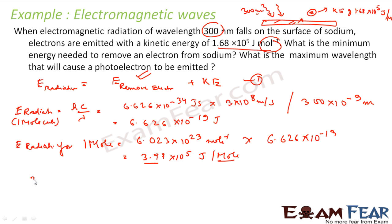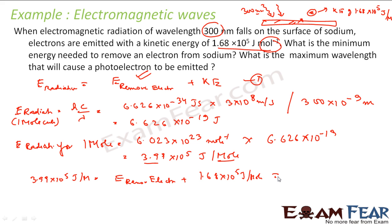Putting this into our equation: 3.99 × 10⁵ J/mol = energy to remove electron + kinetic energy (1.68 × 10⁵ J/mol). Solving this: energy to remove electron = 3.99 − 1.68 = 2.31 × 10⁵ joule per mole. That is the minimum energy required to remove an electron from sodium.